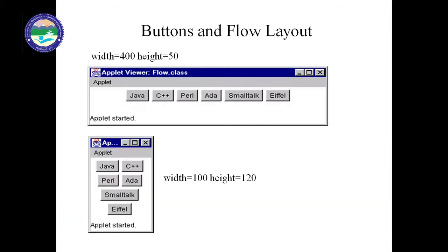The position and size of elements will be automatically adjusted when the window is resized. For example, with a window size of width 400 and height 50, versus width 100 and height 120, the elements are adjusted accordingly in each case.